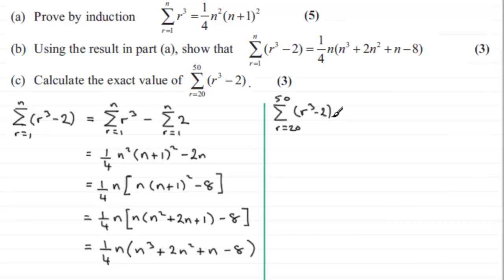Now when you're doing something like this, first of all we notice that it's starting from 20 not from 1. So to get around this problem, all we do is we say this is the same as the summation going from 1 to 50 of r cubed minus 2 and then we subtract sigma r going from 1 to the term below 20.